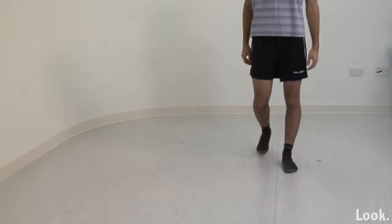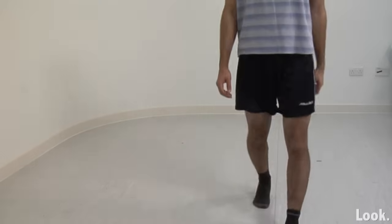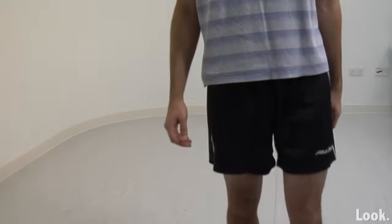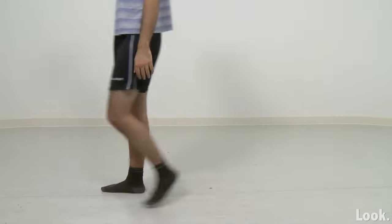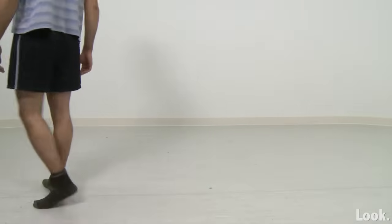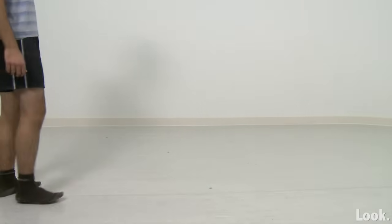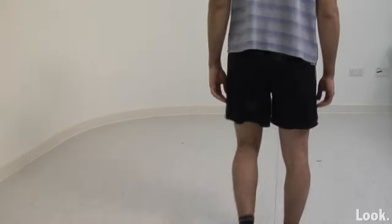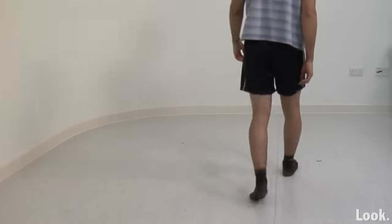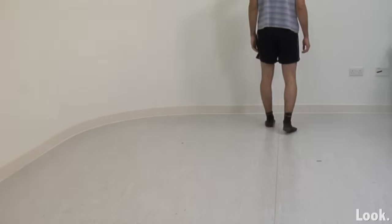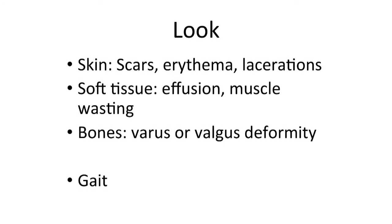After inspection, ask the patient to walk and assess their gait for any abnormalities. An antalgic gait with a short stance phase on the affected side may be a common finding. Look at the front, side and back of the knee joint covering these points systematically, and remember to assess the patient's gait.